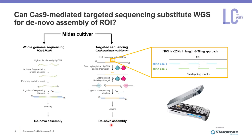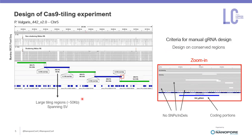Since our region was 250 kb long, we had to plan a Cas9 tiling approach to capture the entire region. Using this approach, the target is divided into smaller overlapping subregions, which are excised using two separate Cas9 pools. To cover the whole region, we designed a total of 10 guide RNAs excising five 50 kb subregions. Those subregions overlapped for about 3 kb and in some cases spanned structural variants. We designed guide RNAs making sure that our guides fell on conserved coding portions containing neither SNPs nor indels.